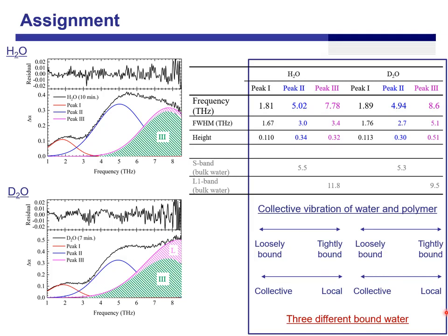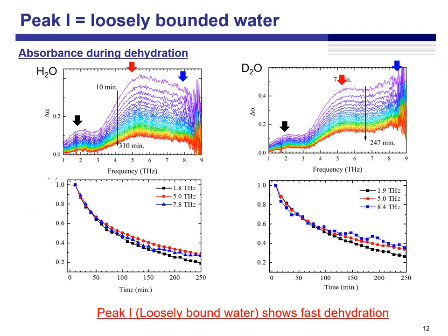We can see there are three types of bound water. And I can show you evidence of our assignment. This graph shows the absorbance during dehydration, plotted as a function of time, normalized. We can see that the lowest frequency mode, peak one, decays much faster. That means the loosely bound water shows fast dehydration, which makes sense.